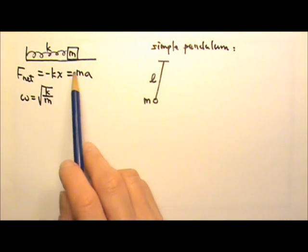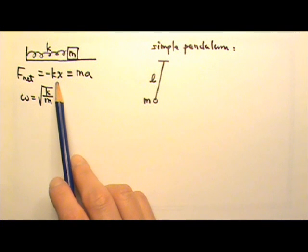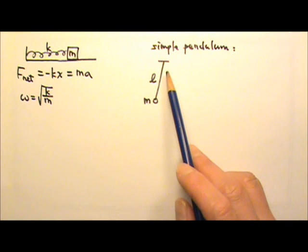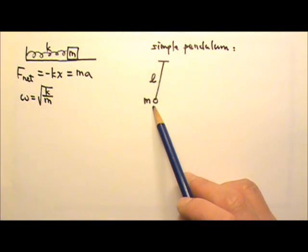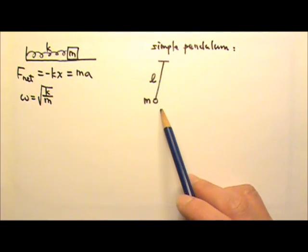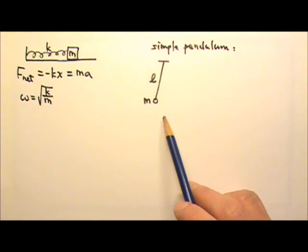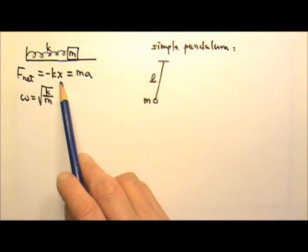We know that a spring mass system with the net force that equals negative kx is a simple harmonic oscillator. A simple pendulum, a pendulum that has all its mass concentrated at its end, is also a simple harmonic oscillator. To prove this, we have to be able to write its net restoring force so it matches the negative kx format.